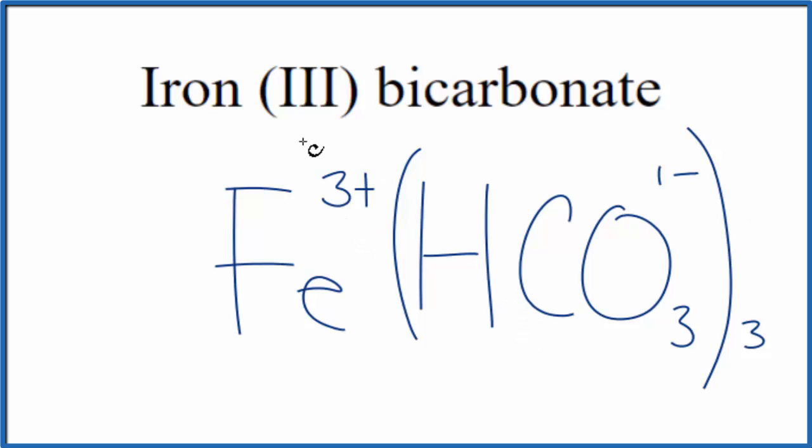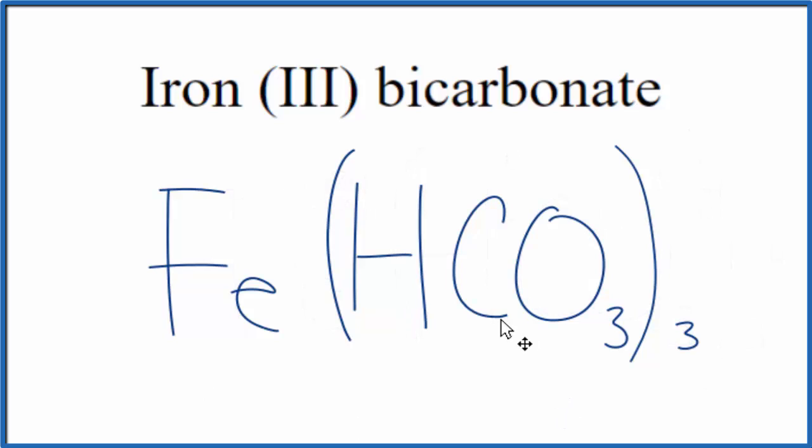So this is the formula for iron(III) bicarbonate, also called iron(III) hydrogen carbonate. Let's remove the symbols here, and there you have it, the formula for iron(III) bicarbonate, Fe(HCO3)3.